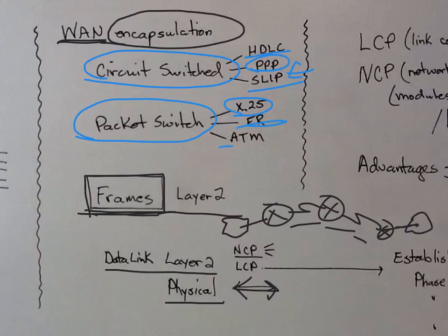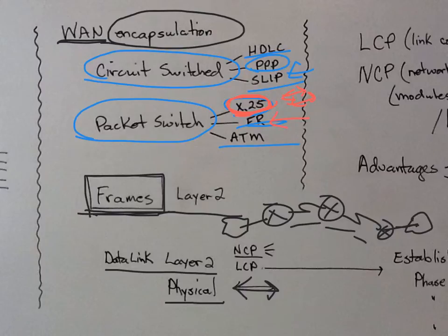X.25 is no longer in use; everybody's using frame relay and asynchronous transfer mode, just as a few examples. X.25 used to be very reliable — it would do lots of checking and sending back, whereas frame relay is best effort: it sends the information without checking along the way. A further-up layer, above the data link layer, can check and ask for retransmission if needed.